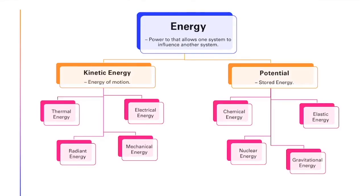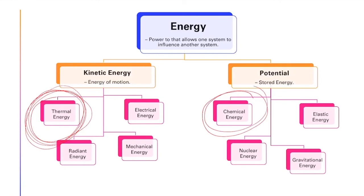And so here's just another overall diagram that shows you the breakdown of everything we just talked about. We've got energy here up at the top with a quick definition—the power that allows one system to influence another. And then we've got our kinetic energy, which is the energy of motion. The thermal energy here is the one that we're going to talk about the most in our thermochemistry unit. And then over here under potential energy, chemical energy is what we're going to be talking about, which is our stored energy.